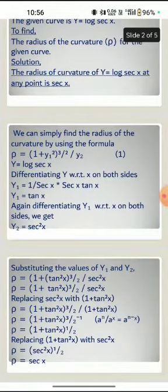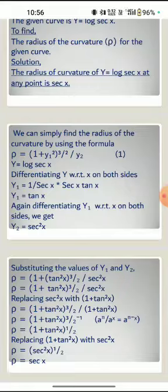We can find the radius of curvature by using the formula ρ = (1 + y₁²)^(3/2) / y₂. Let us call that equation 1.